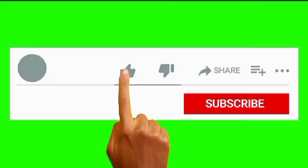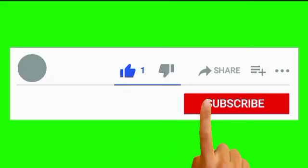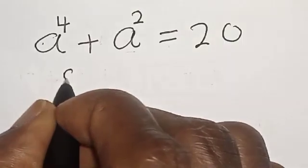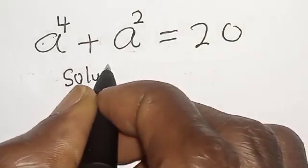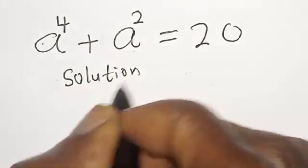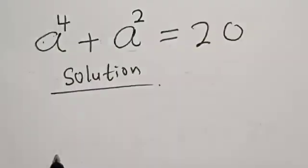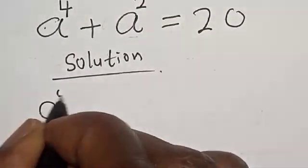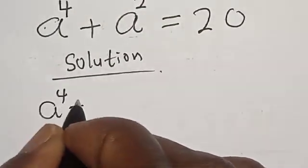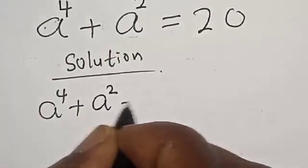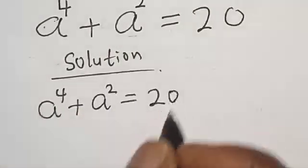But before we proceed, please don't forget to like, share, comment and subscribe. Thank you. Solution. We have the given equation: A raised to power 4 plus A square is equal to 20.